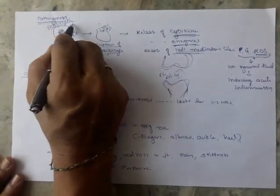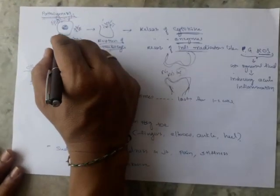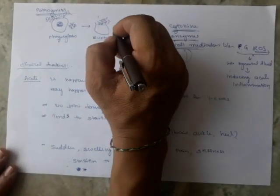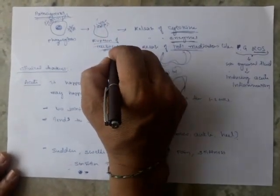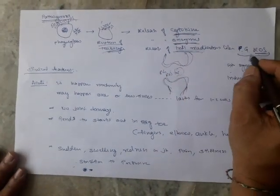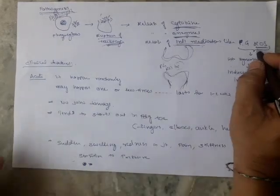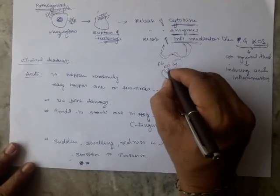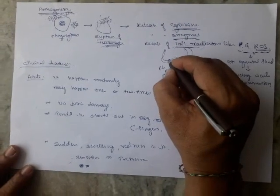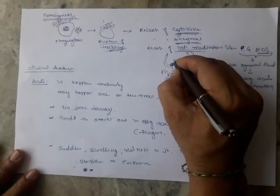Coming to the pathogenesis, the crystals are phagocytosed by the macrophages. Due to the crystal-like or needle-like structure, they rupture the leukocytes and there is a release of cytokines, enzymes, and inflammatory mediators like prostaglandin and reactive oxygen species. This leads to lysis or erosion of the cartilage.